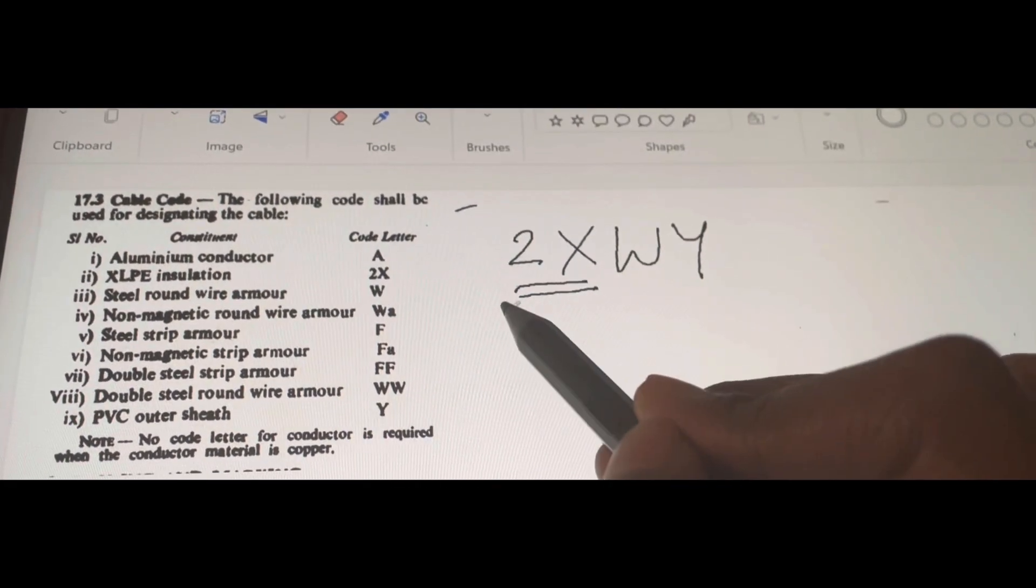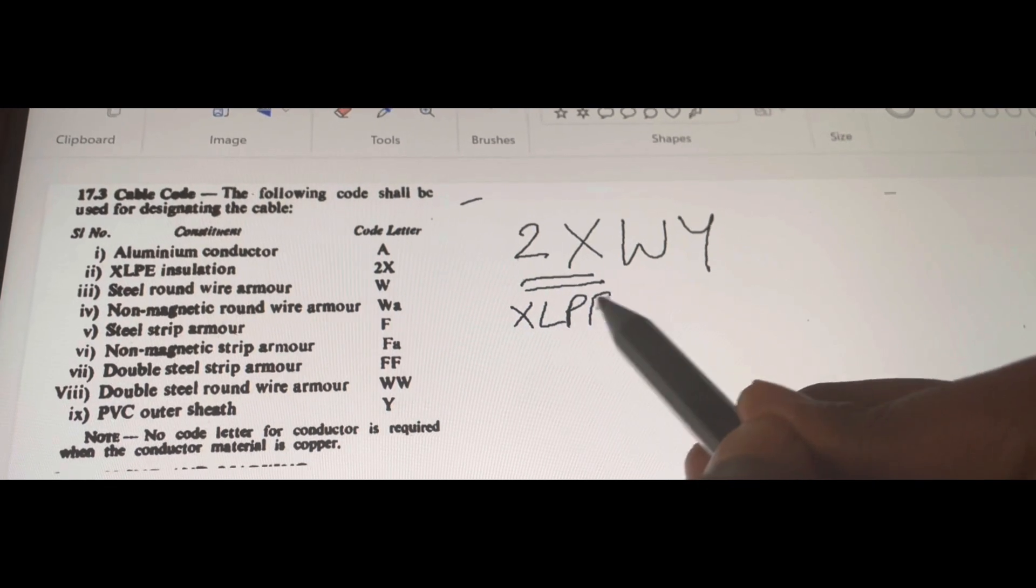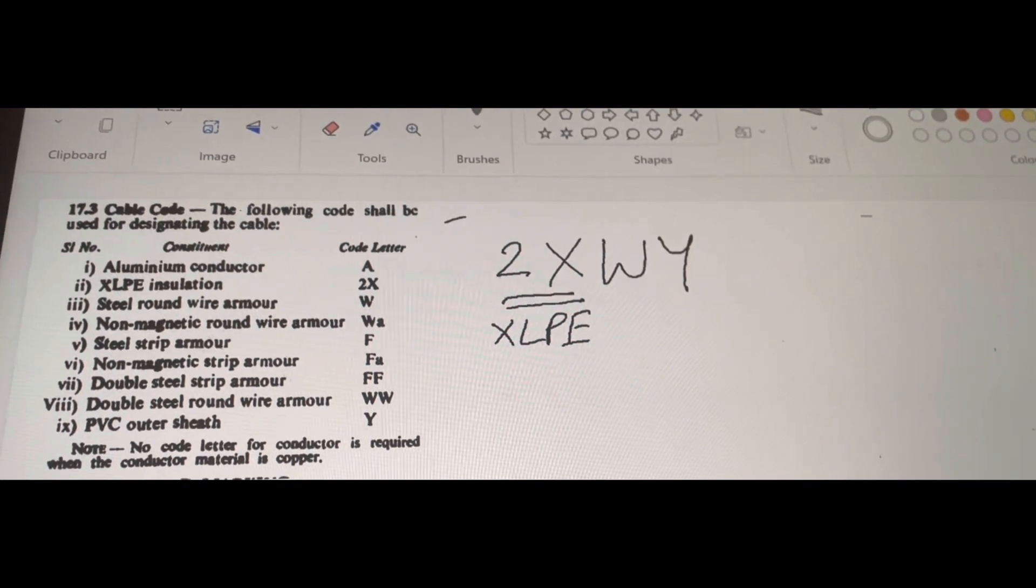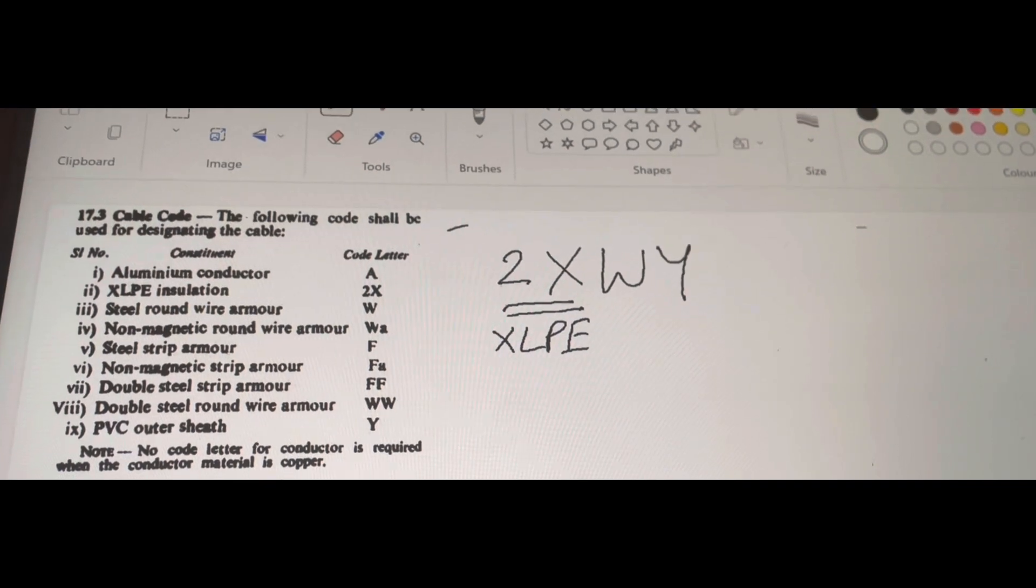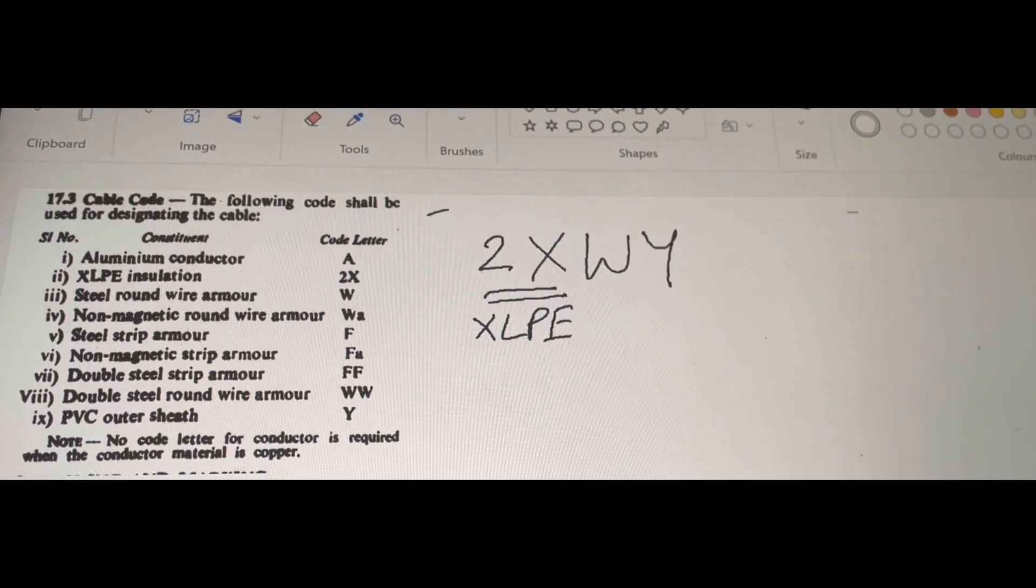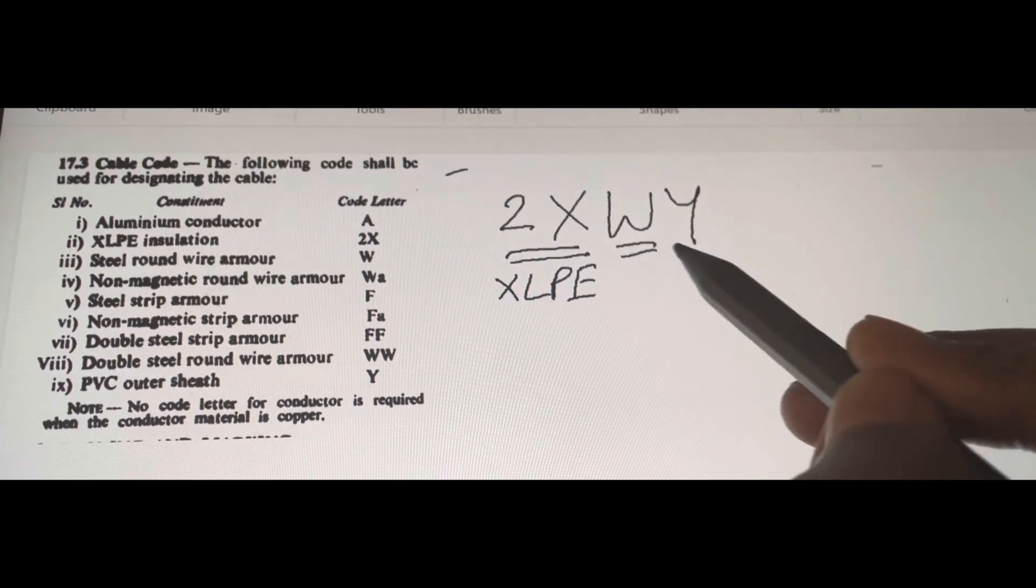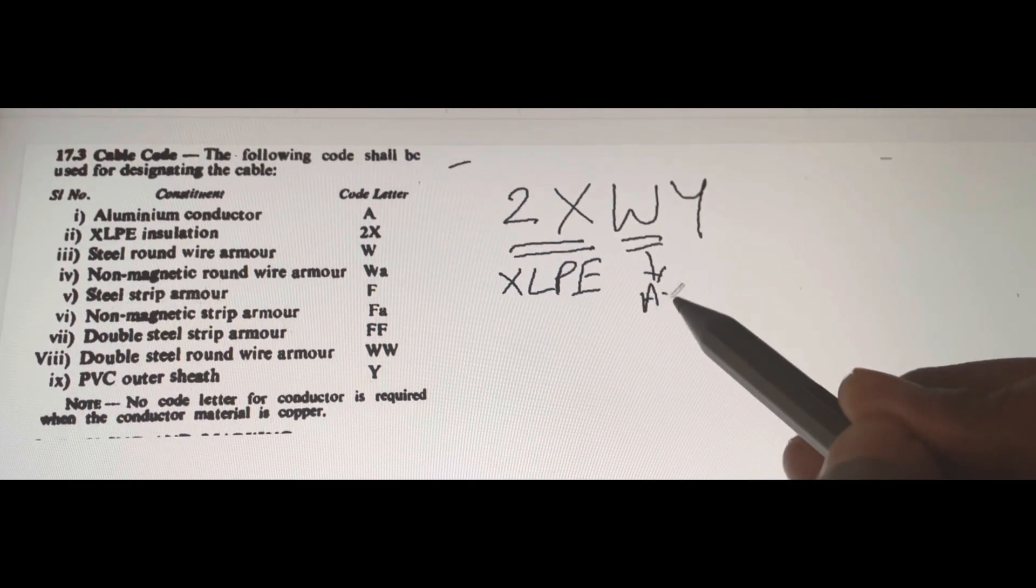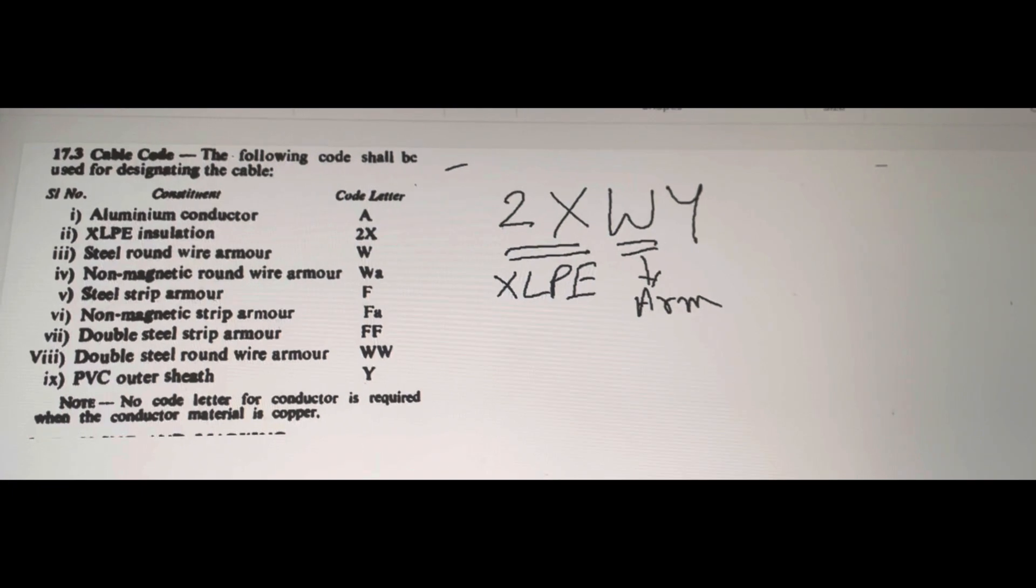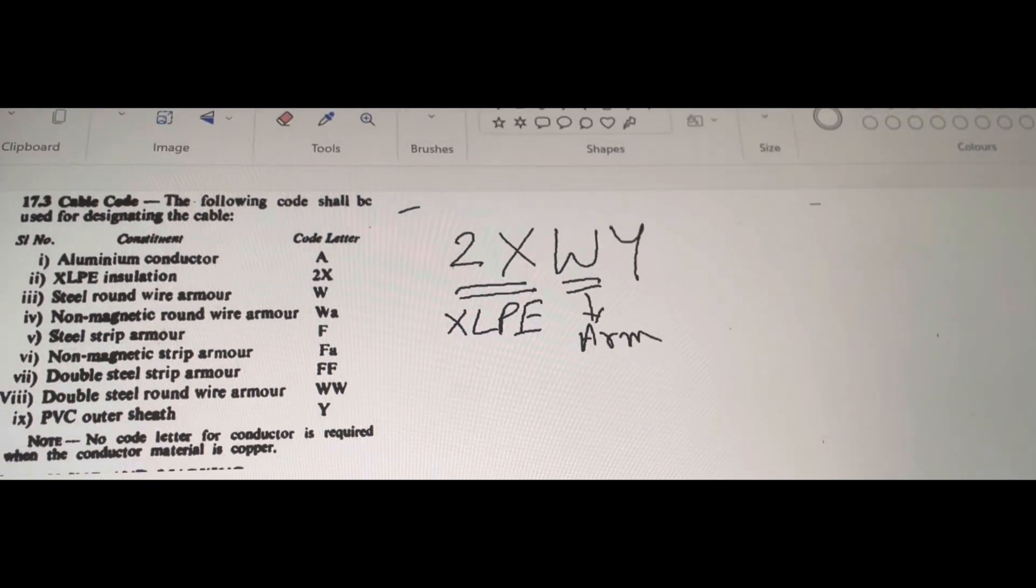The material is cross-linked polyethylene and the next letter w indicates that there is an armoring present in that particular cable and that is made up of steel armoring. This w indicates that there is a steel armoring present in that particular cable and the last letter y